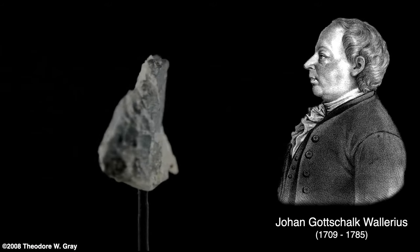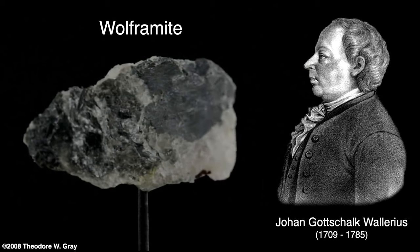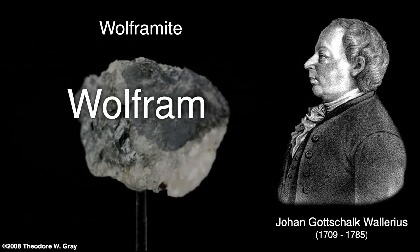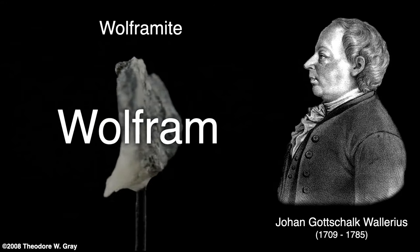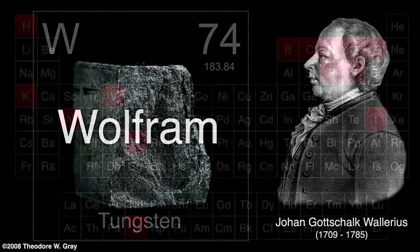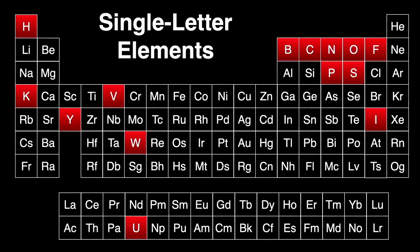However, from that other mineral, wolframite, Swedish chemist Johan Valerius gave the element another name — wolfram — which is still used in many countries. This is why the symbol for the element is W. There are 14 elements with a single-letter designation, most of which we've already covered in this series. After tungsten, we only have one more single-lettered element in Tales from the Periodic Table: element 92, uranium, which I hope to get to in about a year and a half.